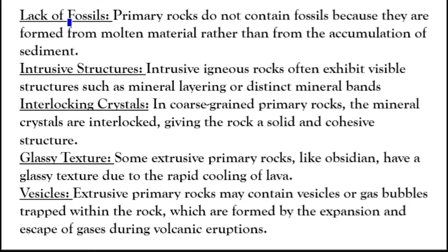Lack of fossils: primary rocks do not contain fossils because they are formed from molten material rather than from the accumulation of sediment. Intrusive structures: intrusive igneous rocks often exhibit visible structures such as mineral layering or distinct mineral bands.